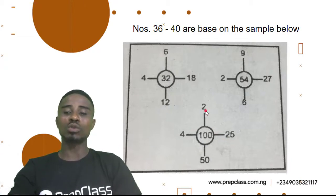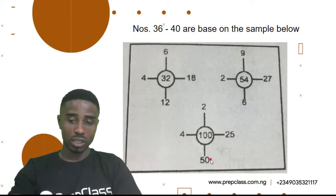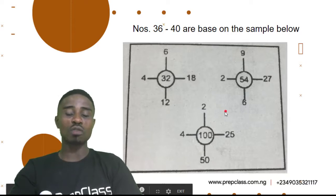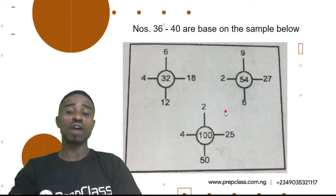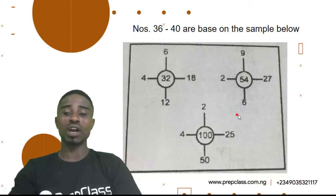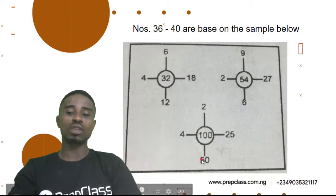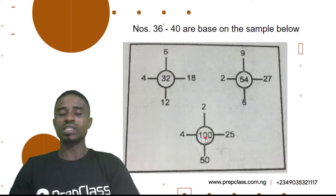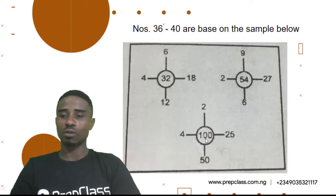25 divided by 2 will give me 12 and a half. 12 and a half times 4 will give me 50, because 12 and a half in four places — if you add two lots of 12 and a half you get 25, and the remaining two give you another 25; 25 plus 25 gives you 50. So, 12 and a half times 4 gives you 50. And 50 times 2 will give you 100. So, this is the exact method we should use in solving questions 36 to 40. Let's move straight up in solving the questions.